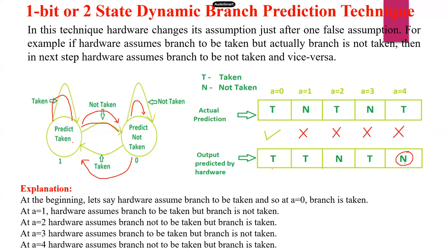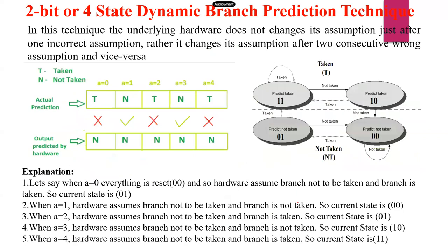At a equal to 4, the branch is predicted not taken by the hardware, but actual prediction is taken — still an unsuccessful output. So we cannot predict exactly. That is why we move on to another algorithm: the four-state, or two-bit four-state algorithm.